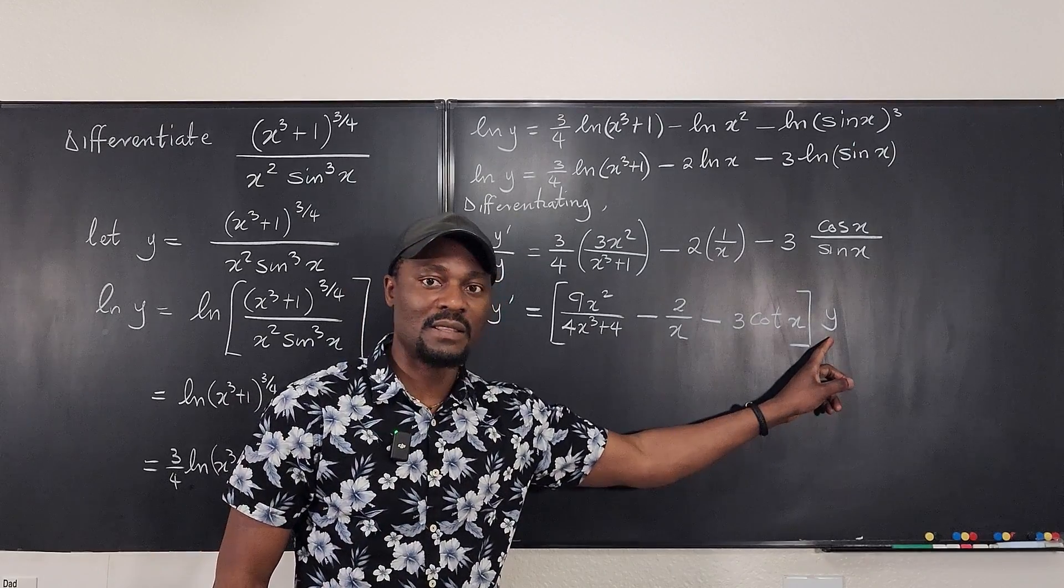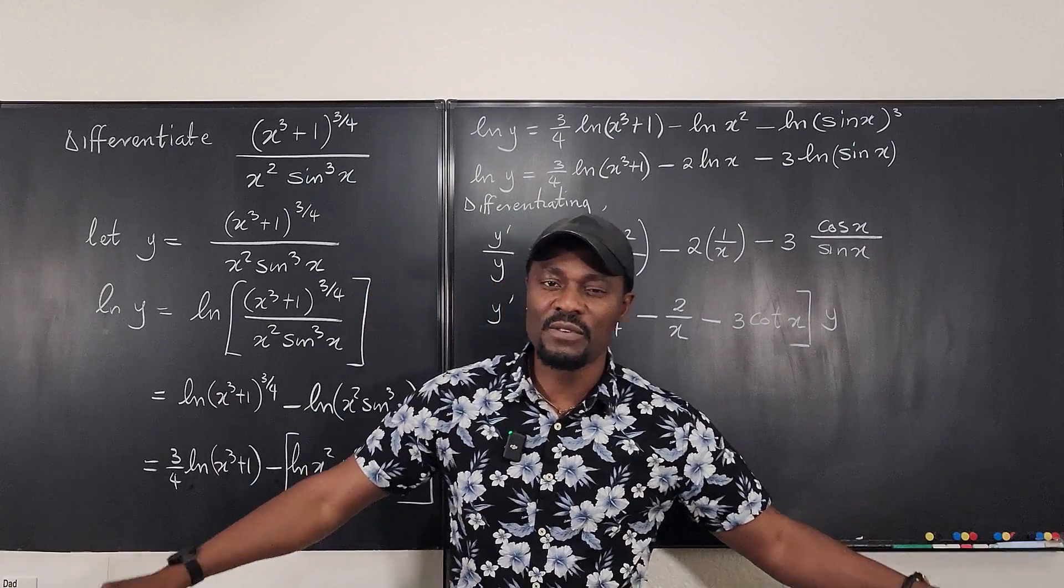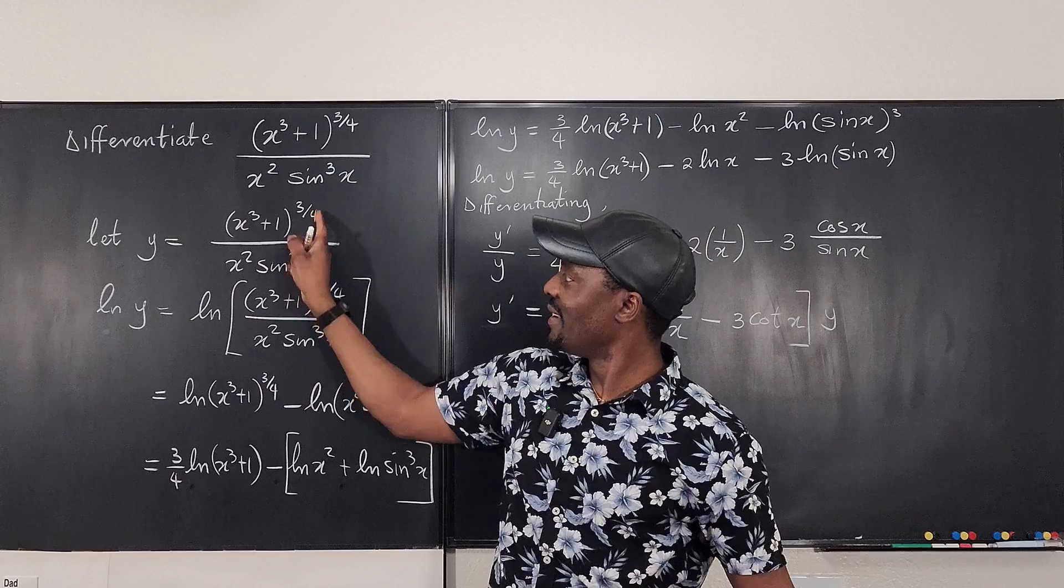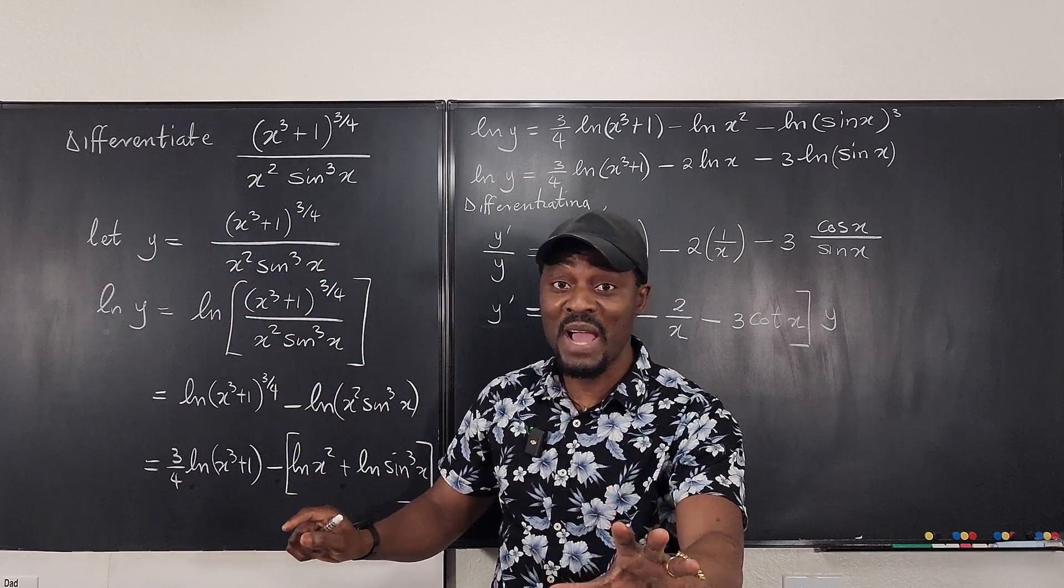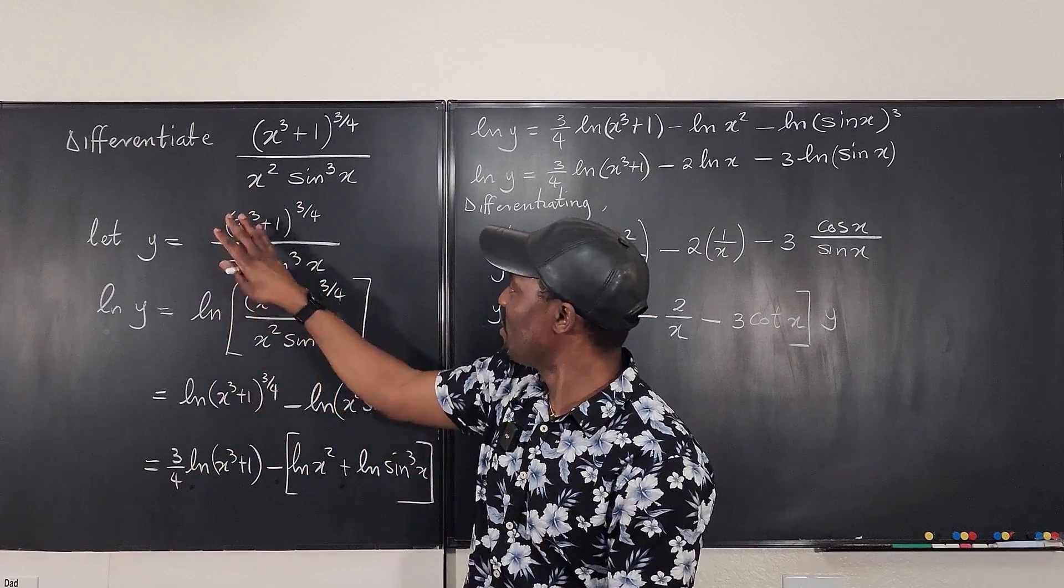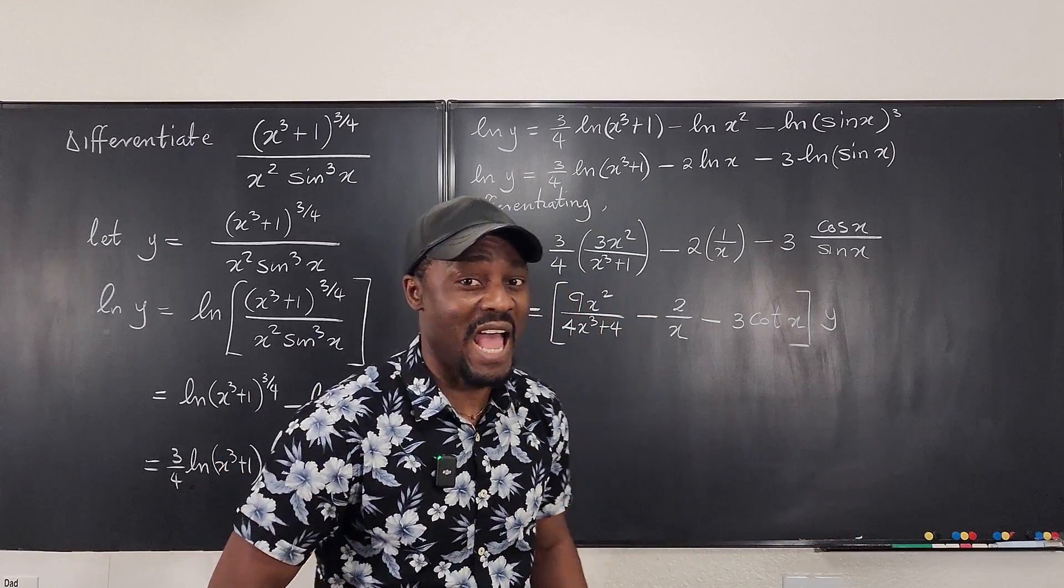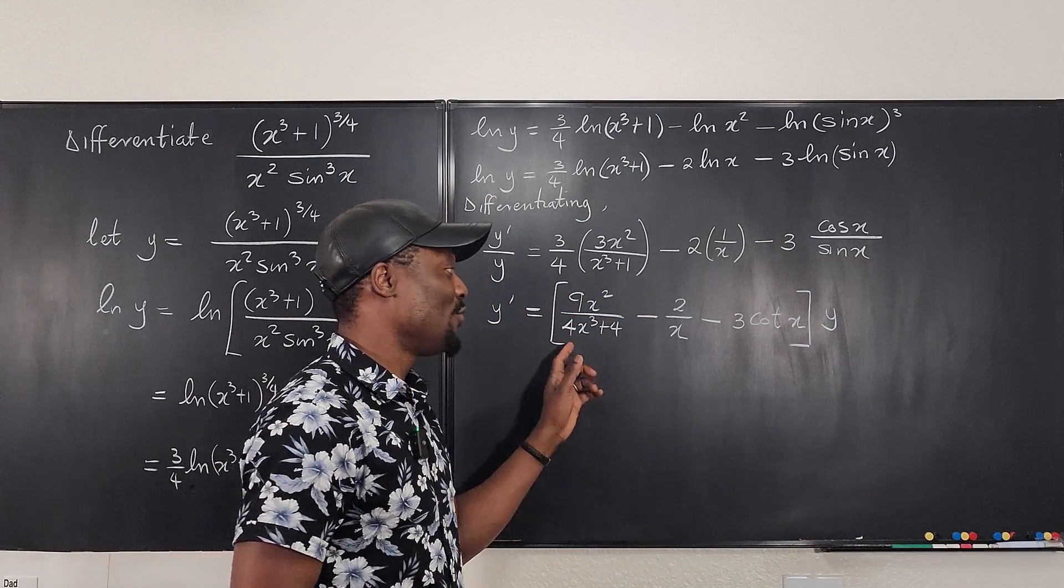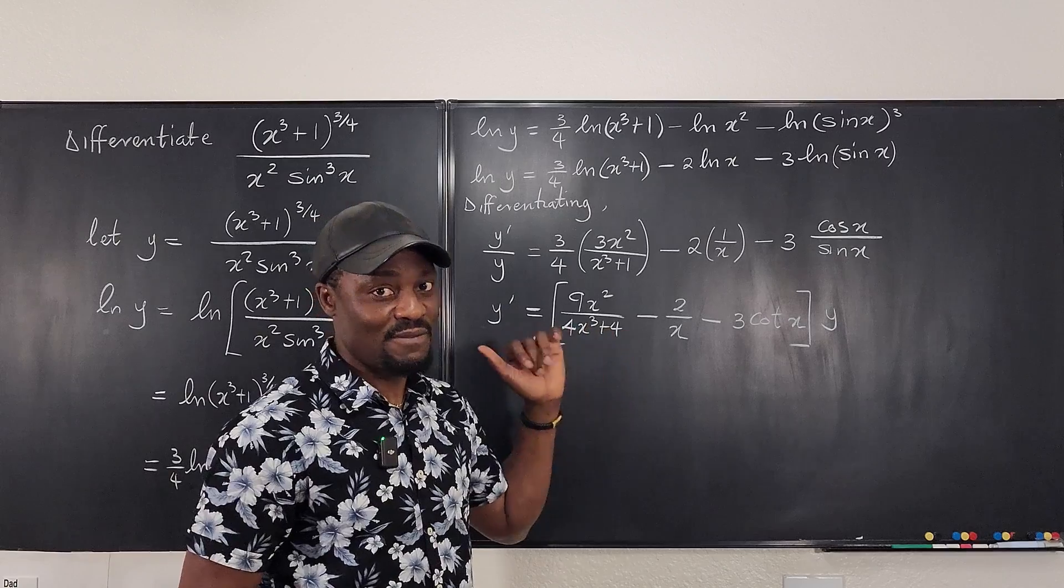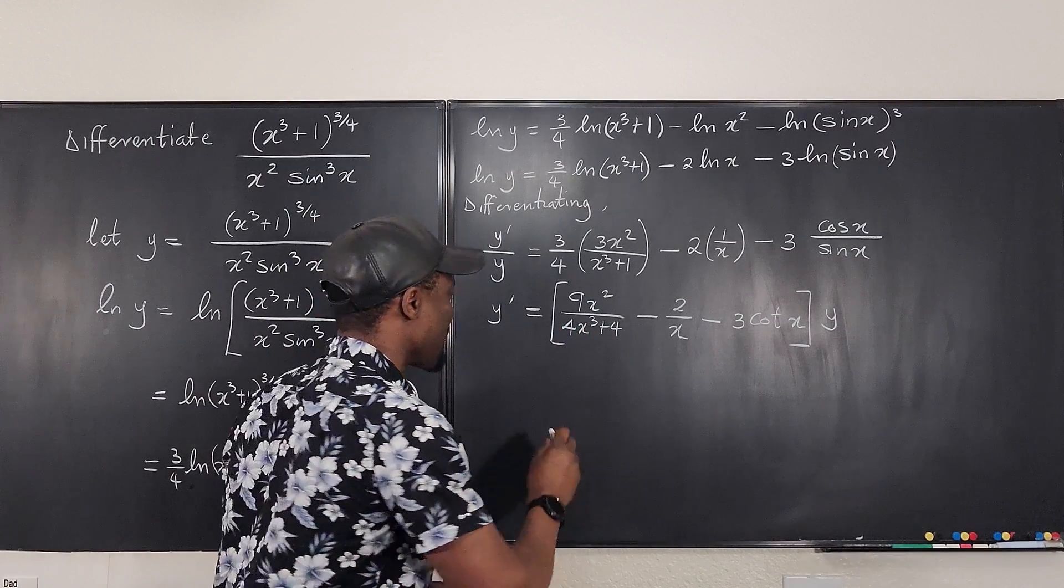But you can't leave your y like this. What did we say y was again from the beginning? This whole function. So you just imagine using quotient rule, and you have this, you're carrying this all around as you're doing a calculation. It would be a disaster. And I bet you, you may not be able to find this if you use the quotient rule. Try it.